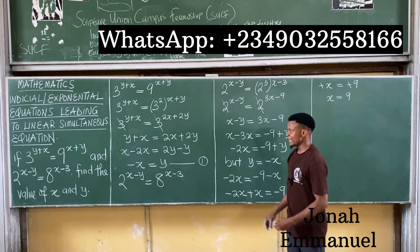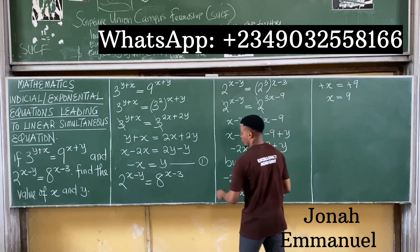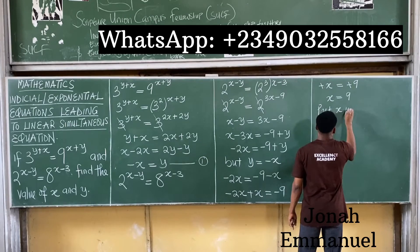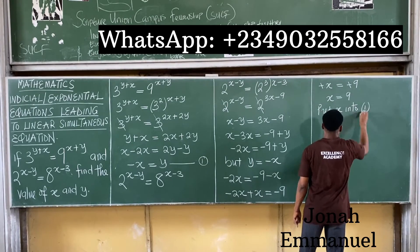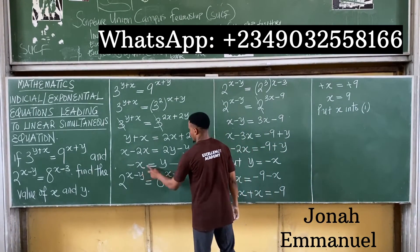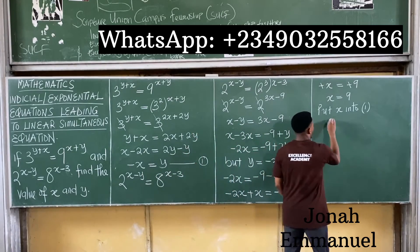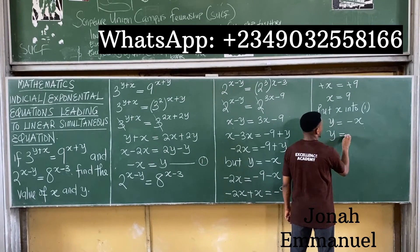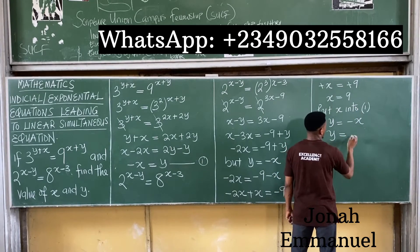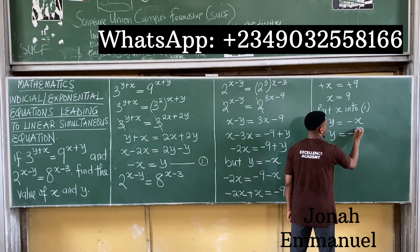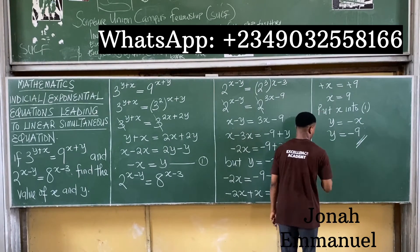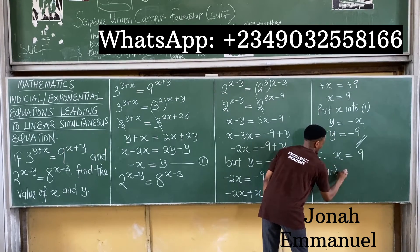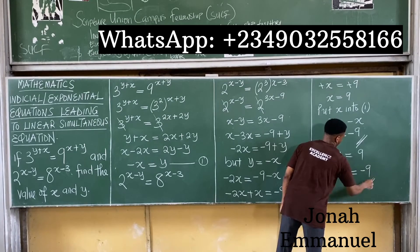We've gotten the value of x as 9. To get the value of y, we use equation 1. From equation 1, y equals minus x. So y is now equal to minus 9. Therefore, x is equal to 9 and y is equal to minus 9.